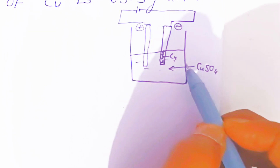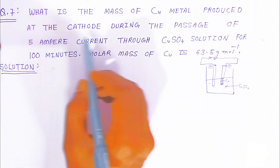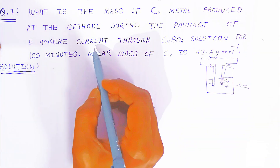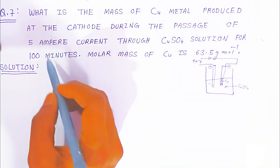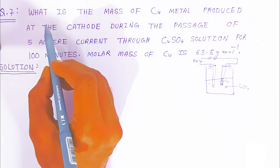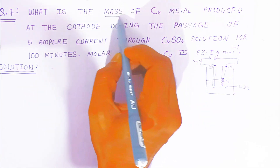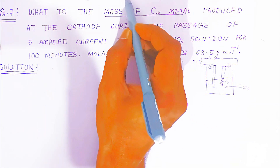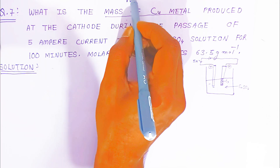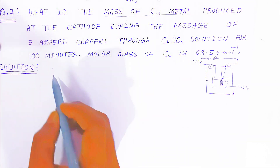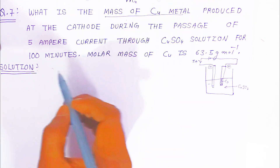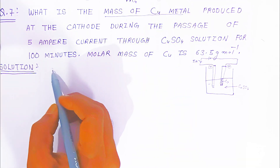How much copper is deposited at the cathode during the passage of 5 ampere current for 100 minutes? The timing is also given — 100 minutes. So what is the mass of copper metal? We are representing it with capital W of copper.